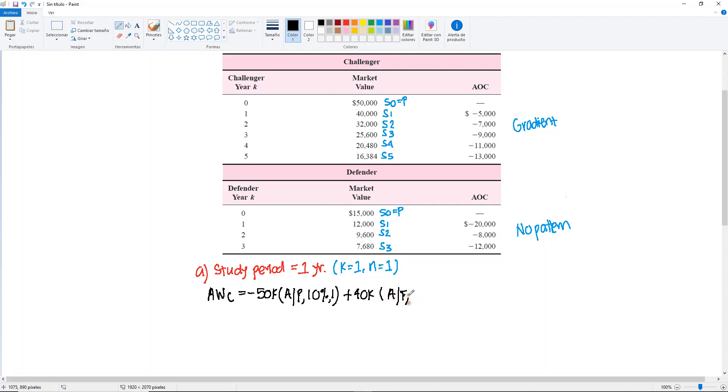that's our S for year 1 only, find A given F, 10%, one, and at this point we only have one value for the annual operating cost, or one year. So we just